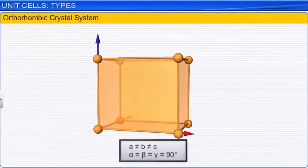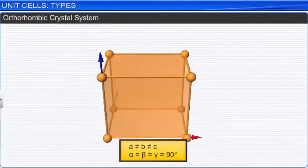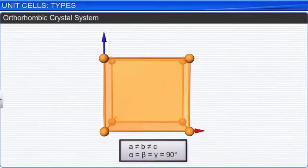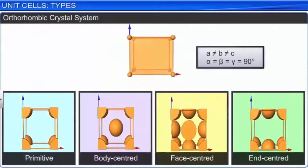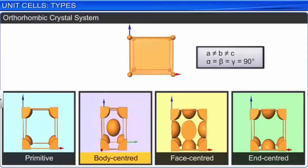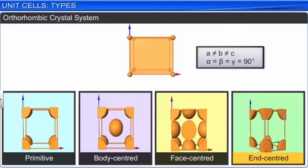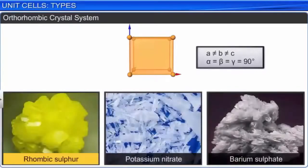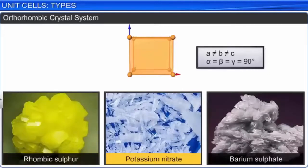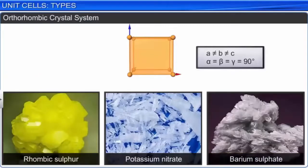In an orthorhombic crystal system, the three axes are unequal, but all axes are at right angles to each other. The possible lattices are primitive, body-centered, face-centered, and end-centered. Rhombic sulfur, potassium nitrate, and barium sulfate are examples of this type.